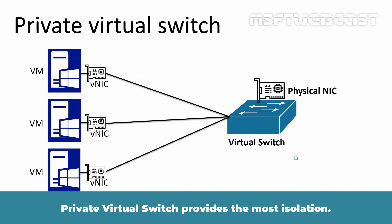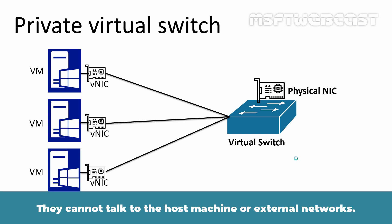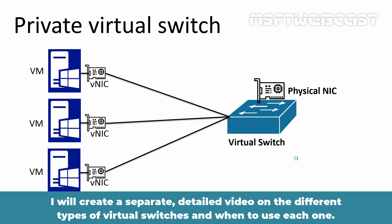A private virtual switch provides the most isolation. VMs connected to a private virtual switch can only communicate with each other. They cannot talk to the host machine or external networks. I'll create a separate detailed video on the different types of virtual switches and when to use each one.